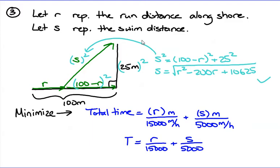The total time formula is the run distance R divided by run speed, plus the swim distance S divided by swim speed. But there are too many variables — T's, R's, and S's. So we use the Pythagorean theorem constraint to substitute in and express everything in terms of R only.